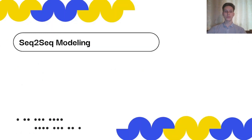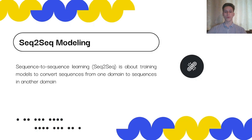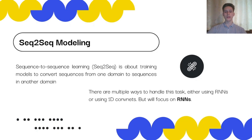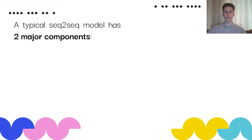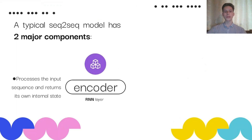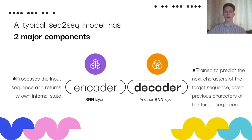In this project we will use the SEQ-to-SEQ model, a special class of recurrent neural network architectures that we typically use to solve complex linguistic problems. This is about training models to convert sequences from one domain to sequences in another domain. There are multiple ways to handle this task, either using RNNs or using 1D convolutions, but we will focus on RNNs. A typical SEQ-to-SEQ model has two major components. The first is one RNN layer named Decoder, trained to predict the next characters of the target sequences given the previous characters of the target sequences.